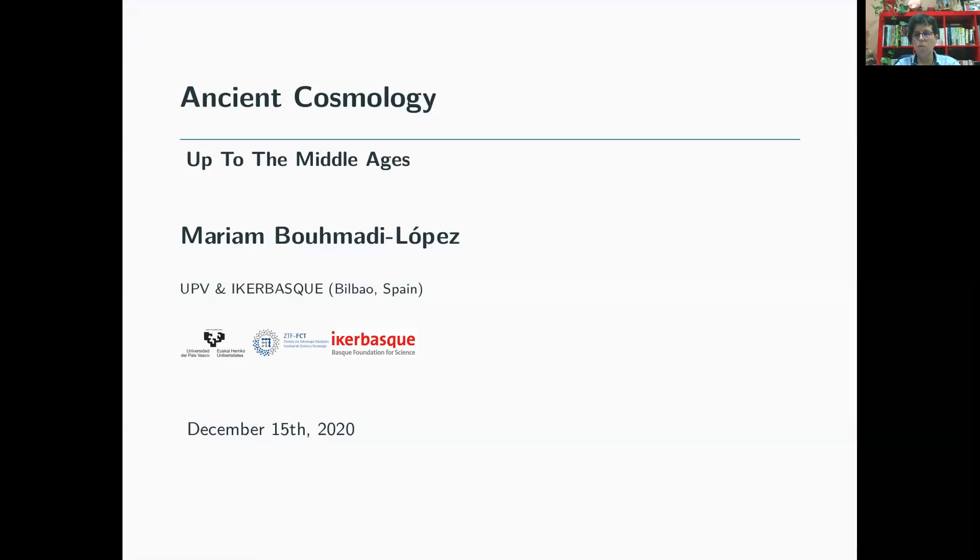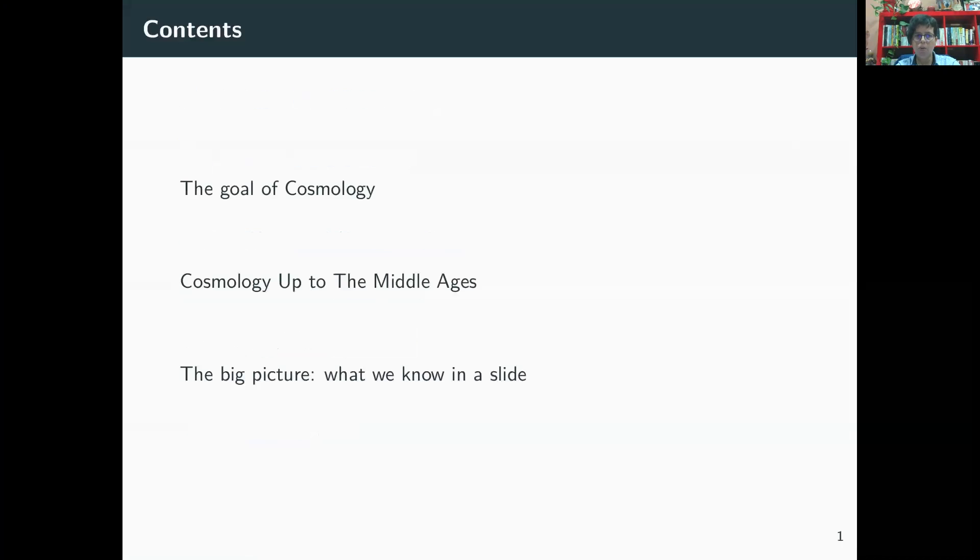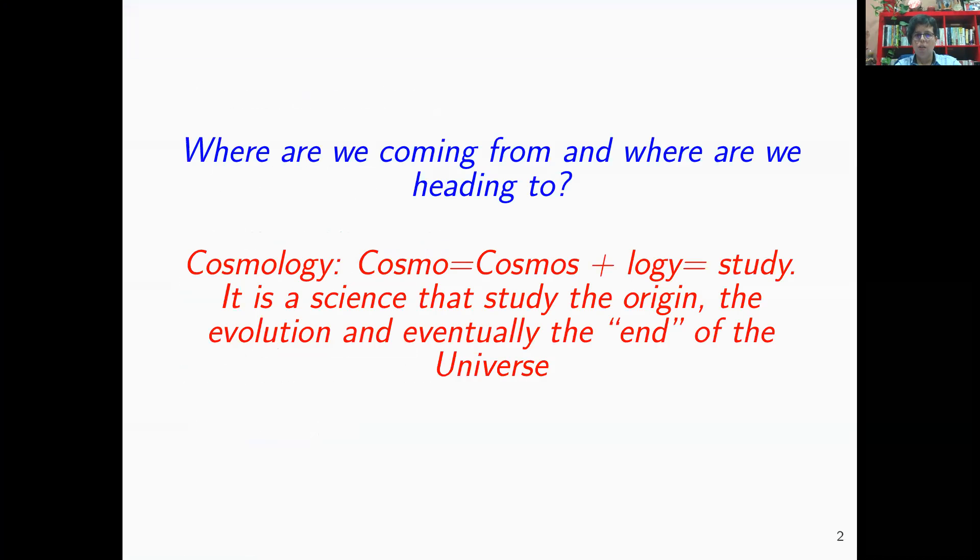We start with ancient cosmology. What did the ancient civilizations think about cosmology? I will go up to the middle age on this first video. So first of all, what is the goal of cosmology? Cosmology is a science which essentially tries to address this question: where are we coming from and where are we heading to? It comes from the word cosmos, which means the universe, and logy, the study. So it's essentially the science that studies the origin, the evolution, and eventually the end of the universe, if any.